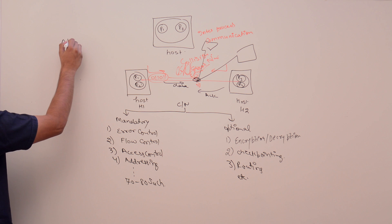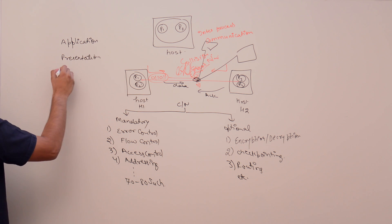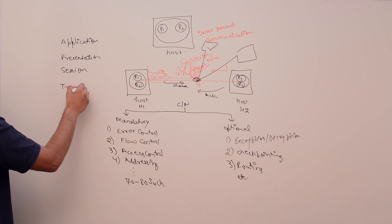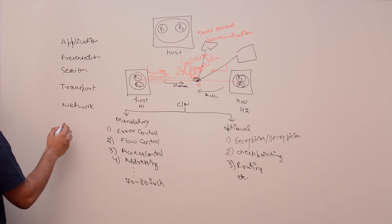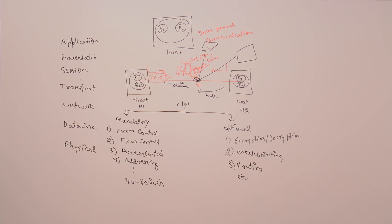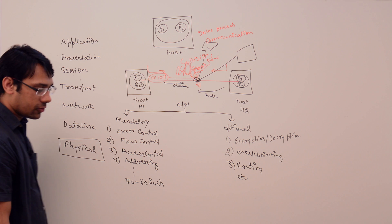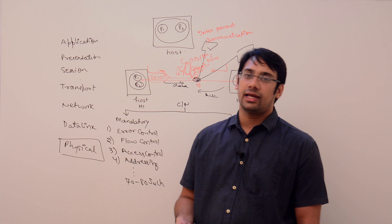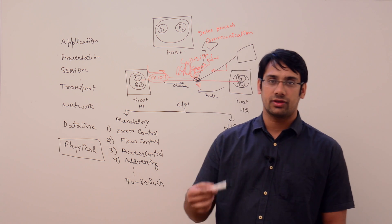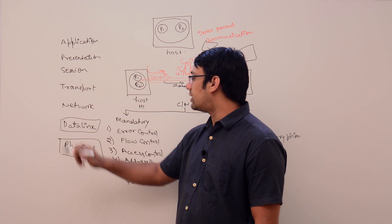Those layers are: Application, Presentation, Session, Transport, Network, Data Link, and Physical. A mnemonic to remember: 'App per se transport nahi de paaya' — Application, Presentation, Session, Network, Transport, Data Link, and Physical. The Physical layer deals with physical characteristics of the network such as topology and medium — for example, LAN, wireless connection, or coaxial cable.